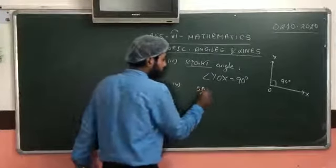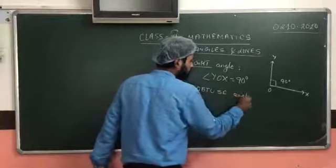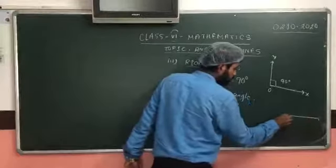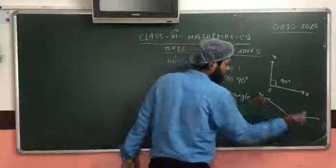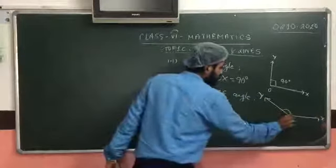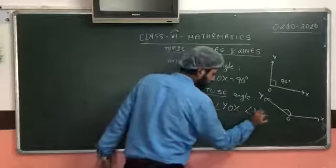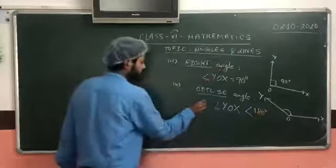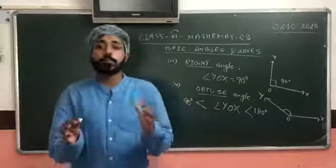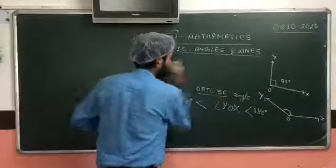Number four is the obtuse angle. What is an obtuse angle? With points O, Y, and X, the angular measurement — say angle Y-O-X — when it is greater than 90 degrees but lesser than 180 degrees, such an angular measurement will be called an obtuse angle.